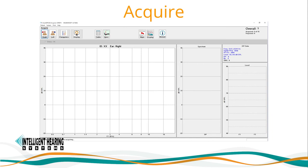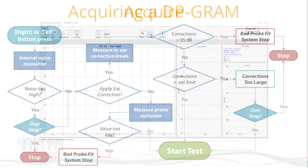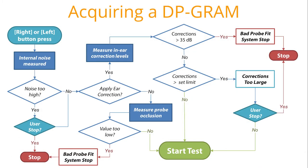Begin testing by selecting the Acquire screen and choosing the right or left Test Ear button depending on the ear the probe is placed in. But before we initiate a test, let's review the general testing procedure in DPoAE.